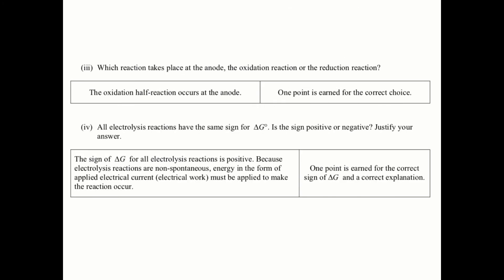In part III, it says which reaction takes place at the anode, the oxidation reaction or the reduction? Well, the oxidation occurs at the anode. Part IV: all electrolysis reactions have the same sign for delta G. Is the sign positive or negative? Since electrolysis reactions are not spontaneous or they are not thermodynamically favorable, their delta G is going to be positive.